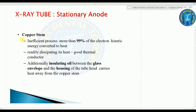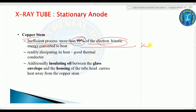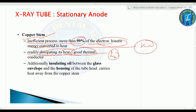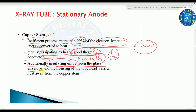More than 99% of the electron kinetic energy is converted into heat. The copper stem is a good thermal conductor that dissipates heat from the tungsten, reducing the risk of target melting. Additionally, insulating oil between the glass envelope and the tube head housing carries heat away from the copper stem.